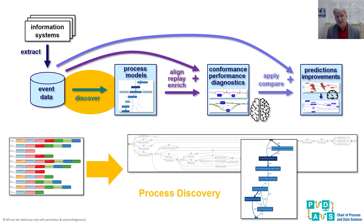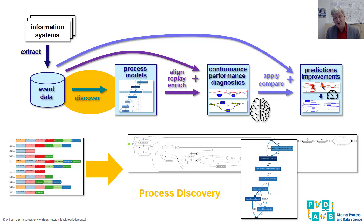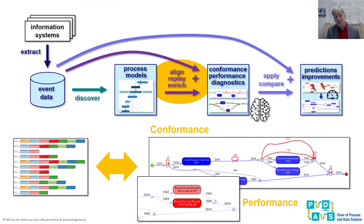The first step after extracting the data is to discover the processes as they actually take place — we do not look at what people say, we look at what they actually do. After discovering automatically, using several algorithms you will learn, we use these Process Models to understand where the process is deviating, where are bottlenecks, and where are things that we would like to improve.